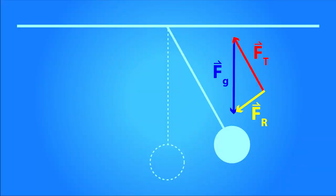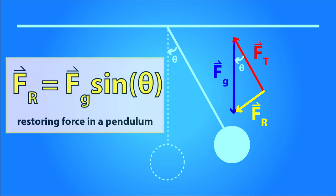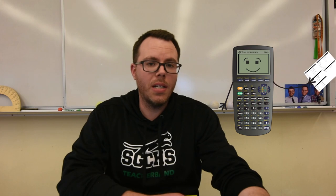Do you think we should calculate the restoring force? In our diagram, the angle between the string and the starting point of the pendulum is the same as the angle at the top of the free body diagram. So the restoring force, which is the opposite side of that triangle, can be calculated by multiplying the hypotenuse — force of gravity — by the sine of the angle. This gives us our formula for restoring force in a pendulum: restoring force equals the force of gravity times sine of angle theta. That formula isn't on your data sheet, so you'll have to either remember it or work it out from the free body diagram for a test.